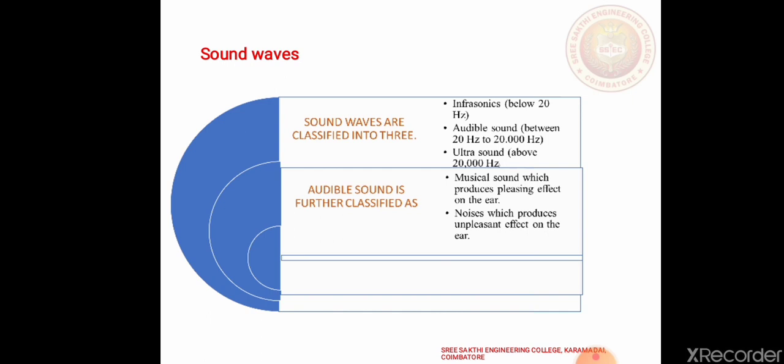Musical sound produces a pleasing effect to the ear. Sounds produced by musical instruments like sitar, violin and piano. Properties of musical sound are: the waveform of musical sound has a regular shape, musical sound has definite periodicity, and there is no sudden change in amplitude.